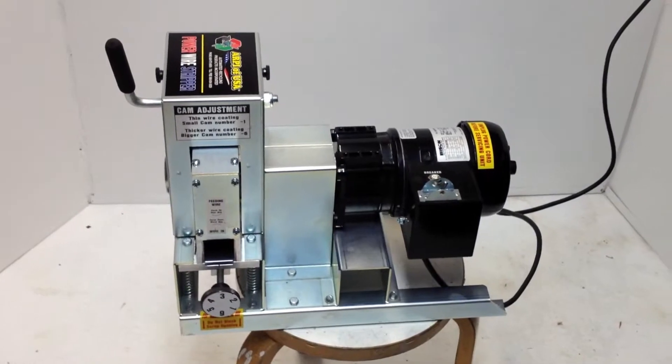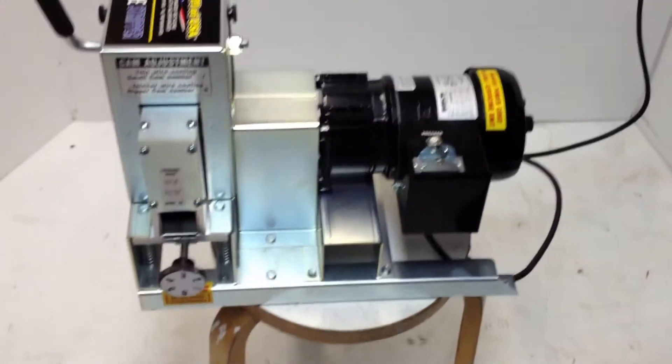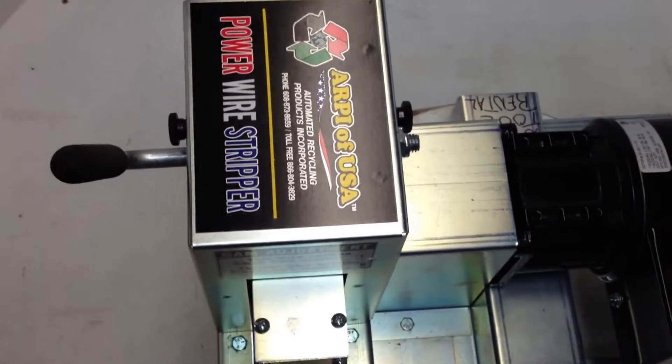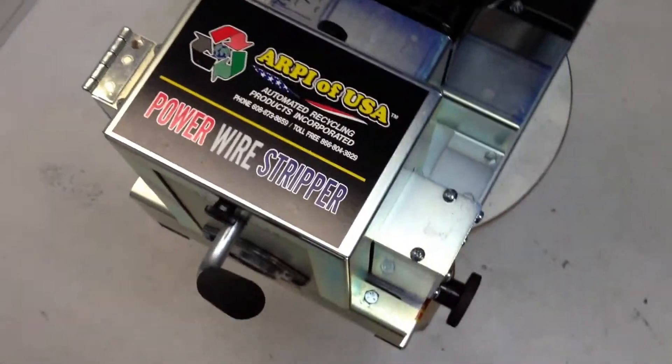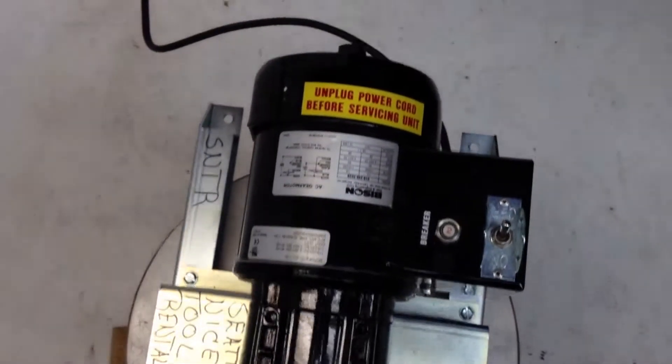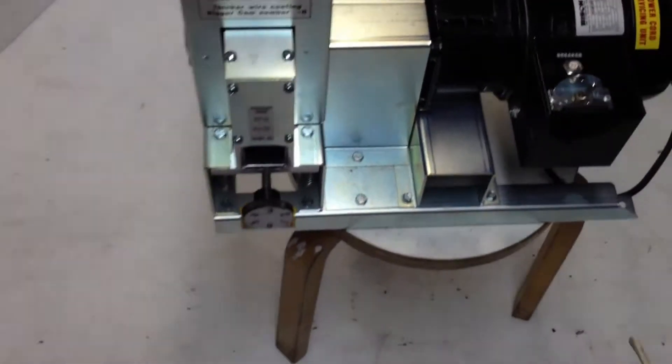This is a power wire stripper and it's something you might not think someone would have to rent, but we have it. It's a really neat machine, basically for stripping extra wire for copper, and it mechanically lets you do it. I'm going to give you a quick demonstration here on some Romex.